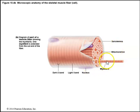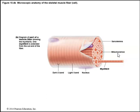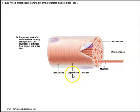Myofibrils make up the skeletal muscle cell, surrounded by the endomysium. Within the individual muscle fiber, organelles include the nuclei and mitochondria — many mitochondria are present because skeletal muscle needs more energy. We see alternating dark A-bands and light I-bands. The letter A is in 'dark,' representing the A-band, and the letter I is in 'light,' representing the I-band. We'll discuss these bands further when we cover the sarcomere.